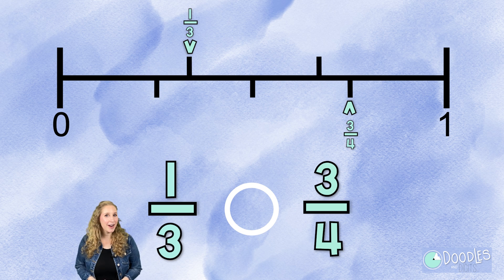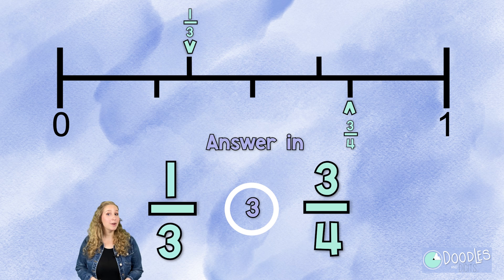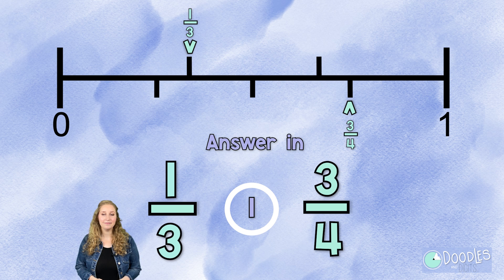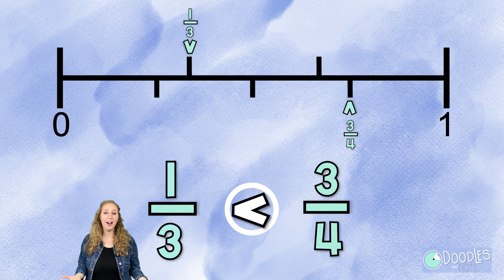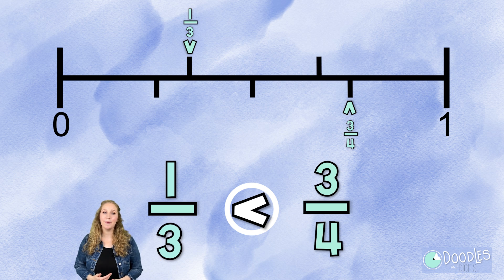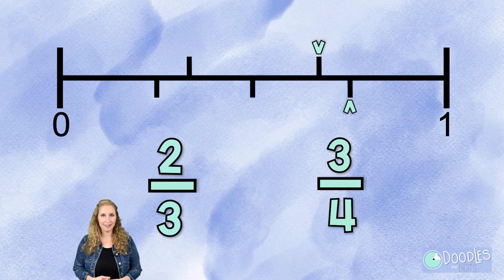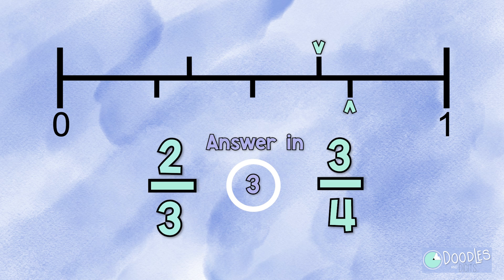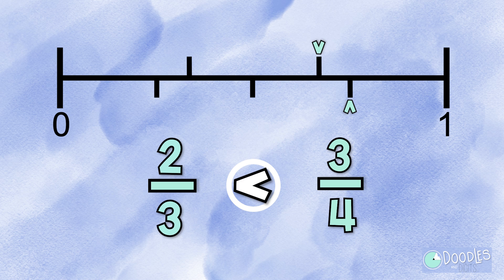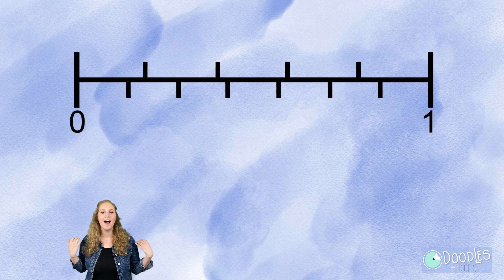Let's try these two fractions. Which one's greater? Let's try another one. Let's compare these two fractions with the number line: two-thirds and three-fourths. Two-thirds is less than three-fourths.